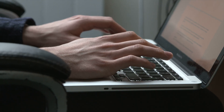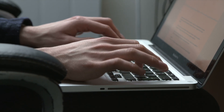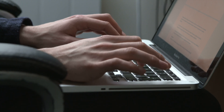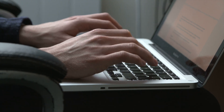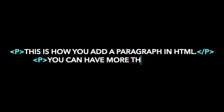When working with HTML, we use simple code structures, tags, and attributes to mark up a website page. For example, we can create a paragraph by placing the enclosed text within a starting paragraph tag and a closing paragraph tag.